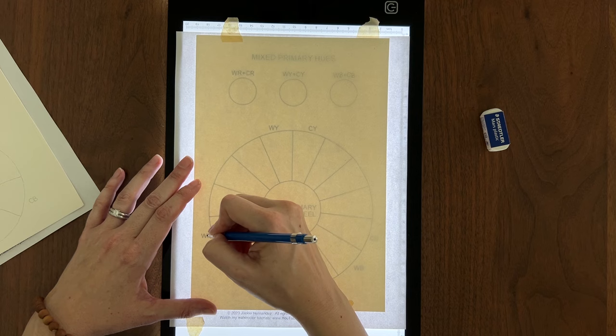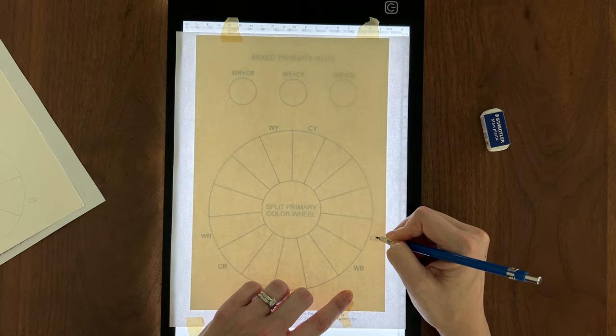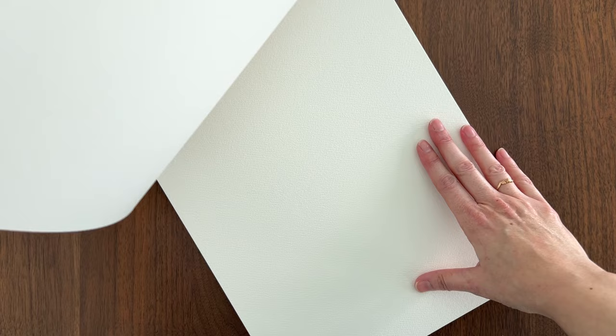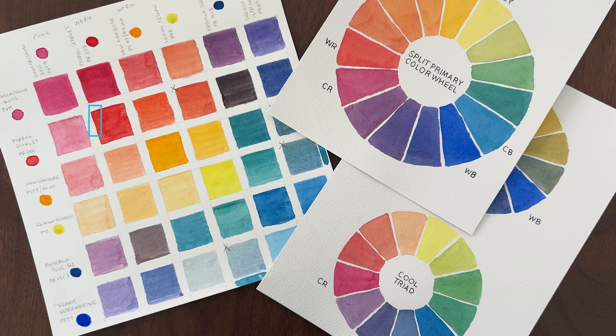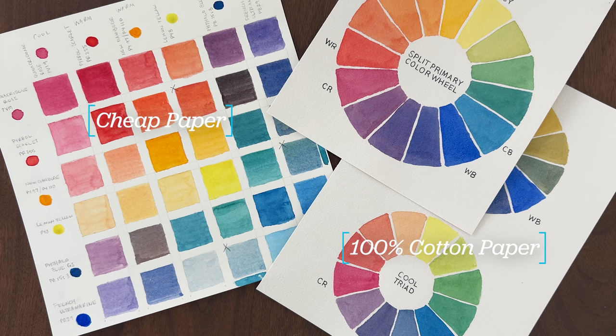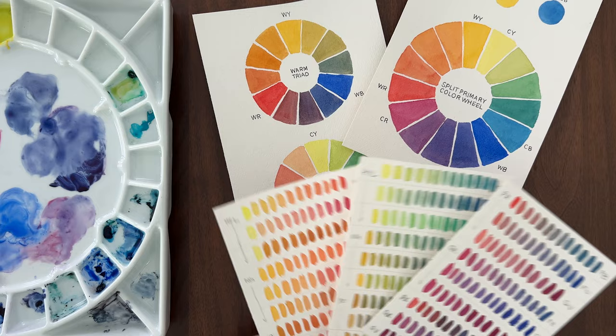I recommend making these color charts on your favorite watercolor paper, even if it's the expensive stuff. Paper quality can greatly affect how your colors look. Trust me, I painted my first color charts on cheap paper and they look awful. These color charts will be most useful if they match the paper you typically paint on.